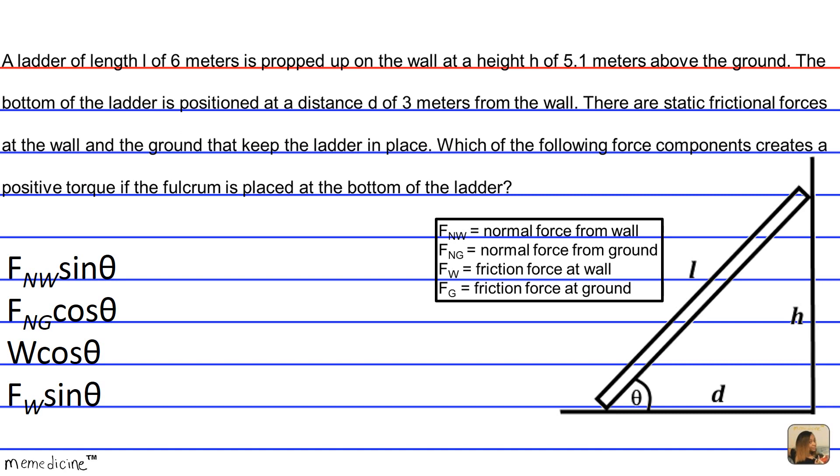Okay, so the forces need to be resolved along the plane of the ladder such that they have an x-axis and a y-axis perpendicular to that. Sort of like how you would analyze the forces on an object on an inclined plane. So since the fulcrum is placed at the bottom of the ladder, and F sub NG, that's the normal force pushing up from the ground, acts at the fulcrum, it's not considered to produce any sort of torque. So this is just something conceptual that you can memorize. Any force acting directly at the fulcrum won't produce a torque.